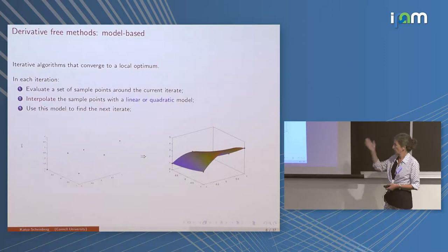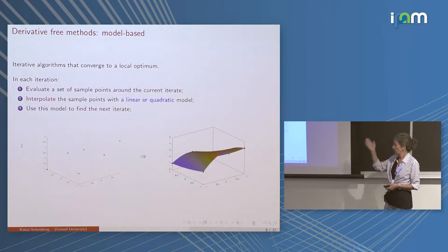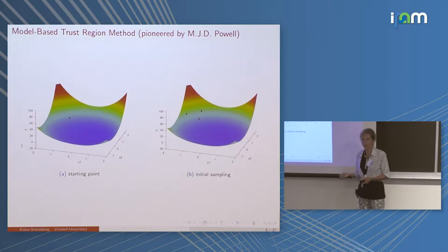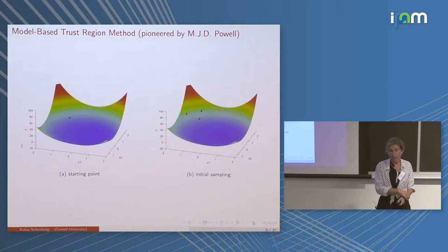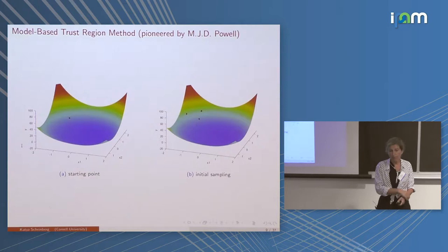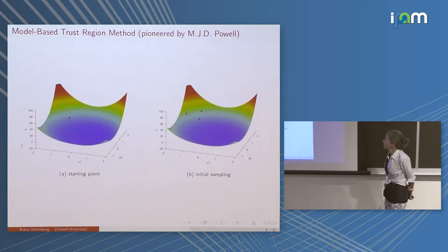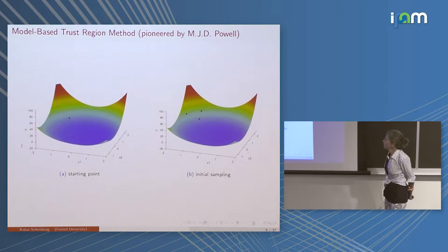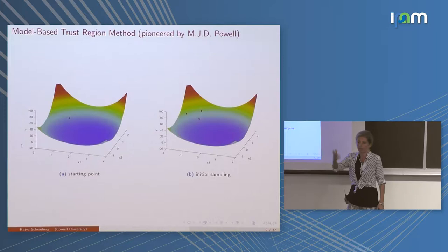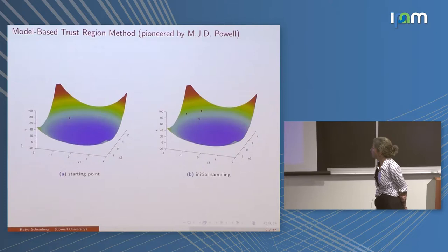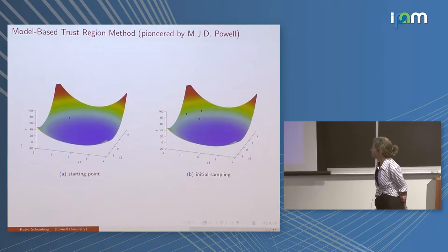I'll talk about linear and quadratic models, but they don't have to be. Here is a method that has been the most efficient when function values are expensive, when the number of parameters is not very large, and when the underlying function is reasonably smooth (possibly noisy). These methods were pioneered by Michael Powell about 20-plus years ago; they're not super easy to implement, but they're really efficient. They're based on trust region, a classical methodology in optimization.